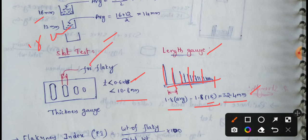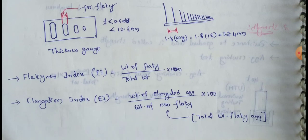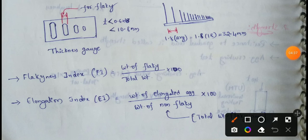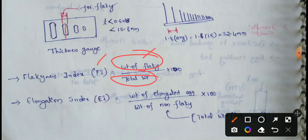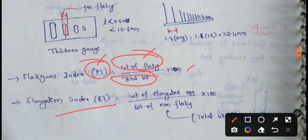In the aggregate shape test, we conduct the flakiness index test first, and then conduct the elongation test on the remaining non-flaky material. This is how the flakiness test and elongation test are connected.